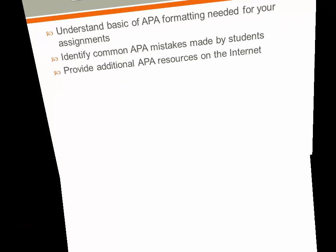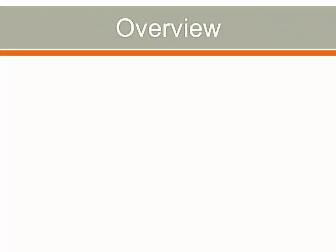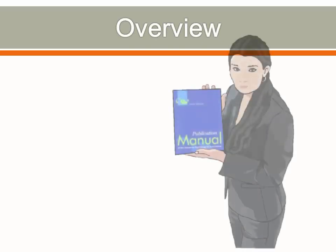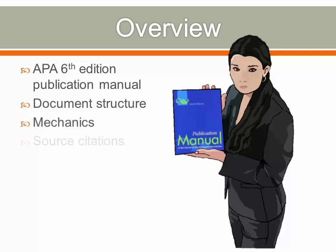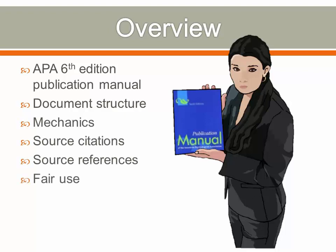This presentation draws on information from the 6th edition publication manual of the American Psychological Association, typically referred to as the APA writing style. It includes APA document structure, mechanics, source citations, source references, and fair use of copyrighted materials. For more detailed information, you will need your own copy of the APA 6th edition manual.